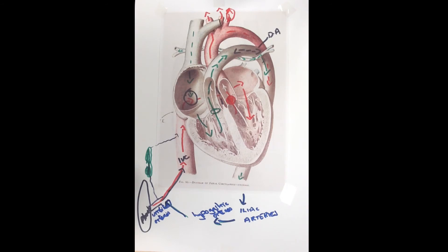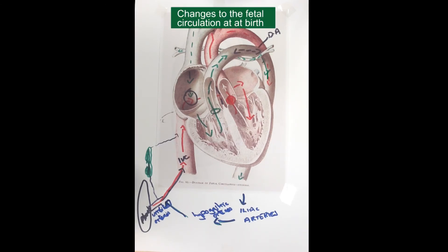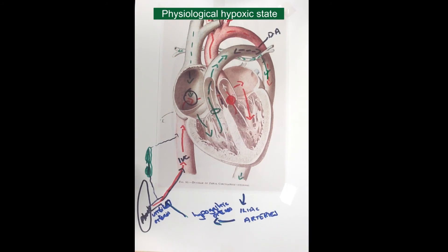That's the fetal circulation and how it operates. Once the baby is born, various changes occur because the baby will need an adult circulation as it is now breathing air. These changes are triggered by many factors. Initially, there is a physiological hypoxic state — the mother's contractions cause hypoxia. High levels of carbon dioxide, which stimulate the respiratory centre in the medulla oblongata, cause the fetus to try and breathe.